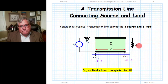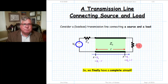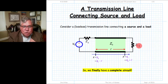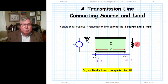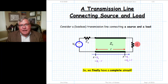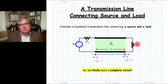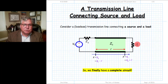Ultimately, we determined boundary conditions at the end of the line and were able to come up with the relationship between V0 plus and V0 minus — one that depended on the load reflection coefficient at the end of the line. From that, we showed that the reflection coefficient function and the line impedance function became completely unambiguous, completely determined by this relationship.